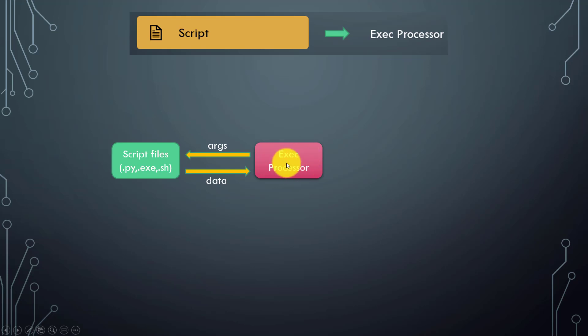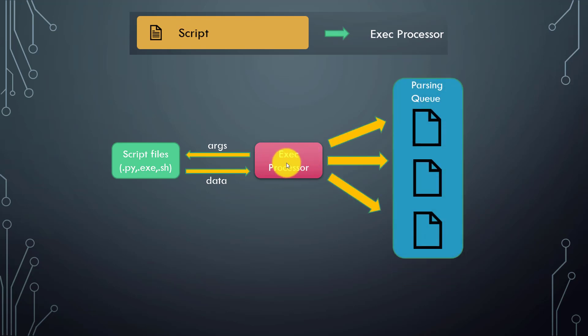That's the communication mode for scripted input — it's very easy to understand. Once the exec processor receives the data, it sends it to the next queue, which is the parsing queue. We'll see how to view parsing queue logs in future videos. That's how scripted input works.